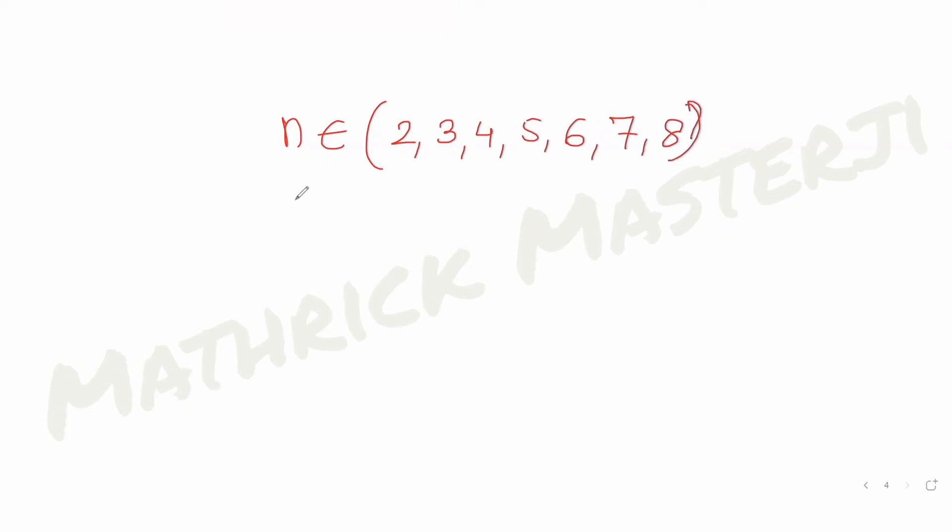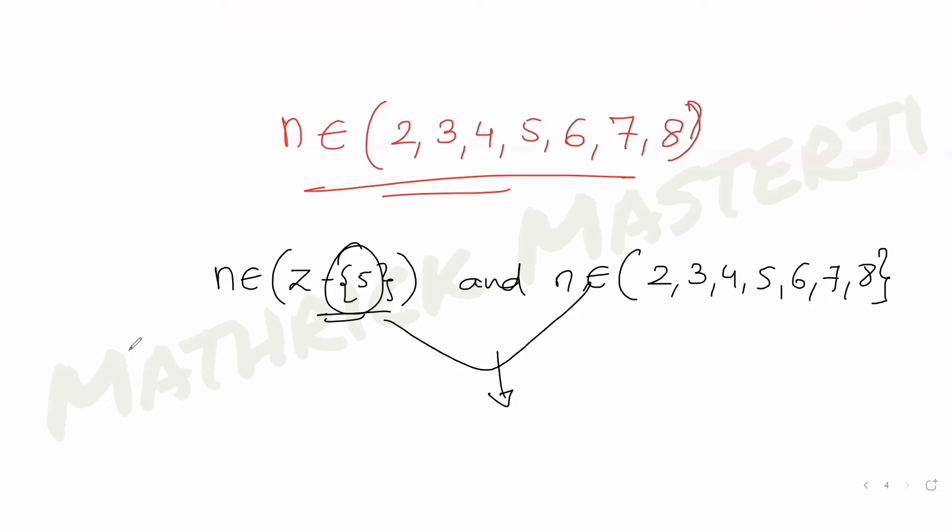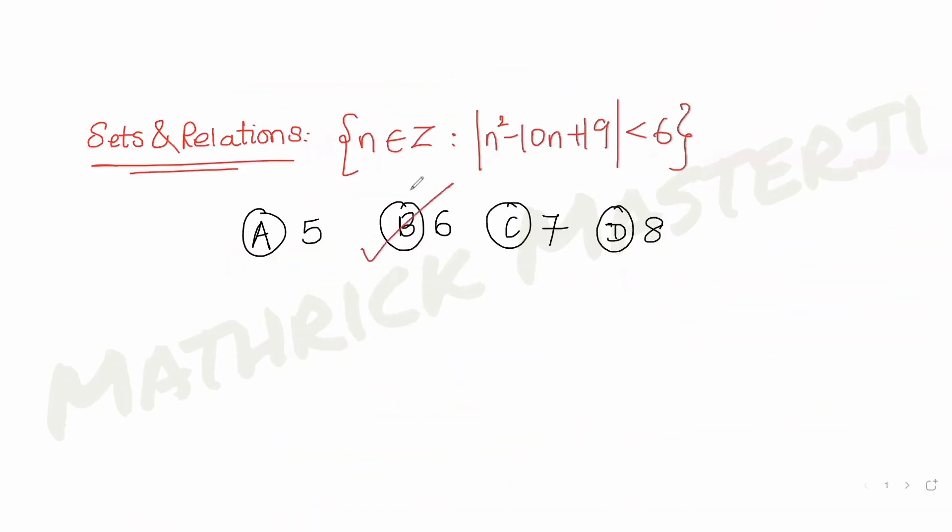Let's combine both of the ideas. First idea told me n can belong to all the integer values except 5. The second tells me n can belong to all the values from 2 to 8. If I combine both of these ideas, I can have the values of n everything from 2 to 8 but I cannot have it as 5. So I get 6 elements in this set n. That becomes the answer, option B.